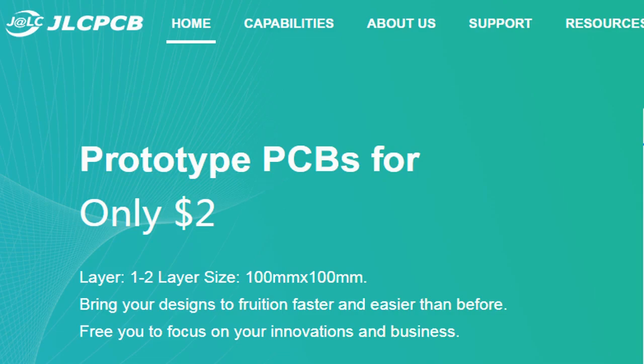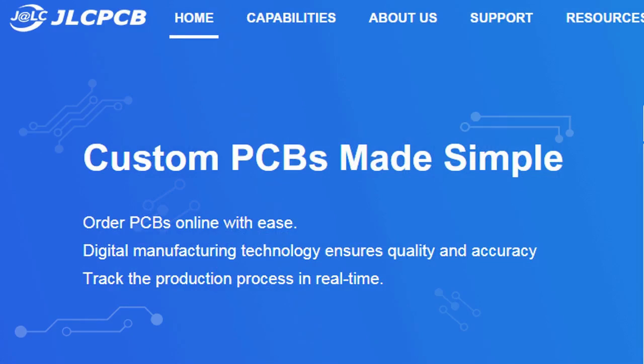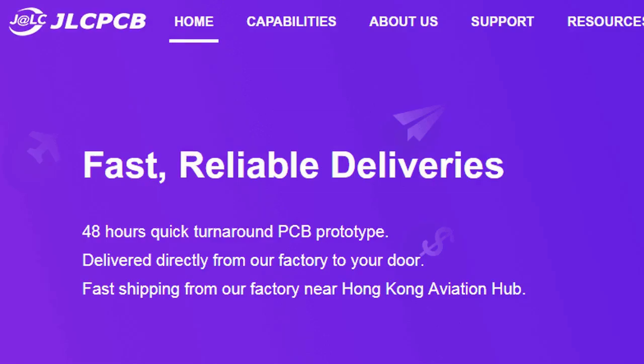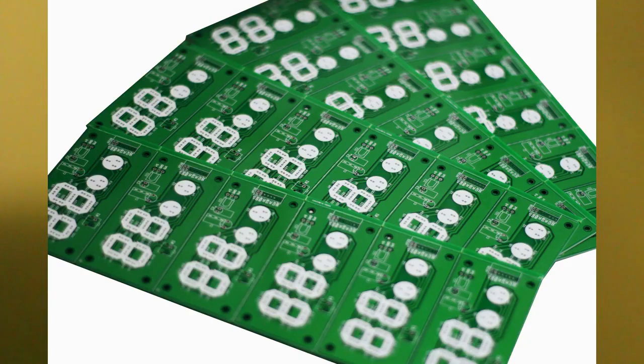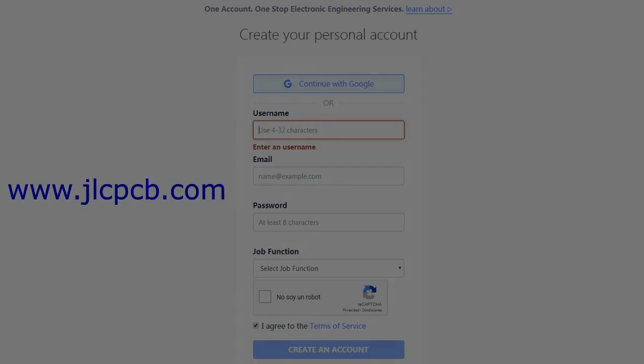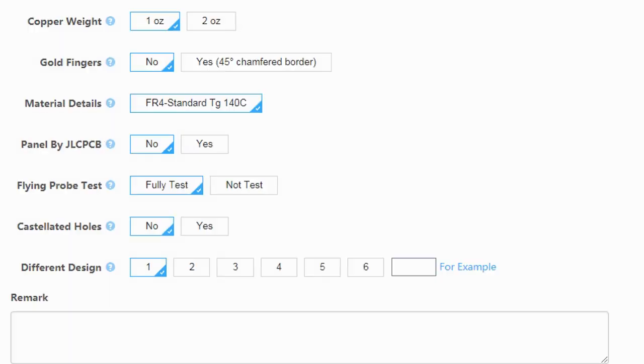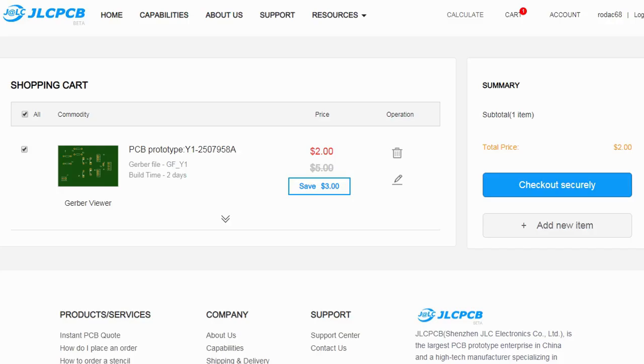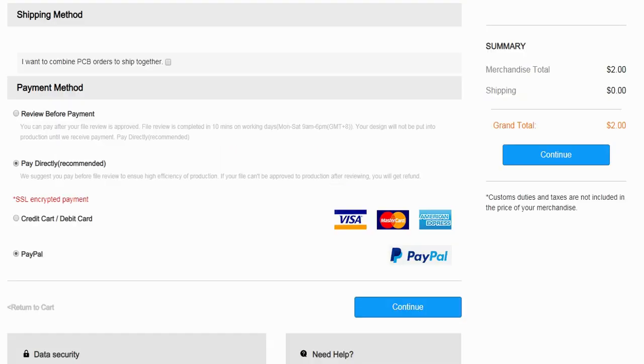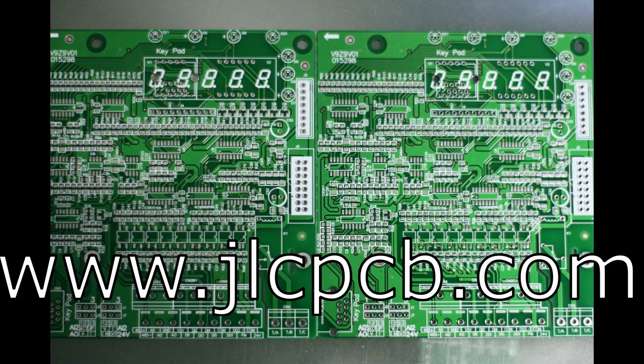This video is sponsored by JLCPCB. JLCPCB is a company that makes excellent quality PCBs at an unbeatable price. You can order boards online in minutes. After registration, upload your gerber files, select the PCB properties, select the payment method and place your order. Best price and quality for all your PCB needs.